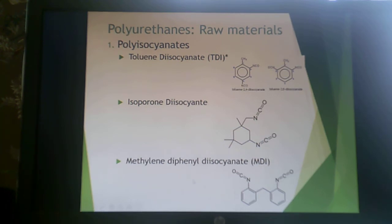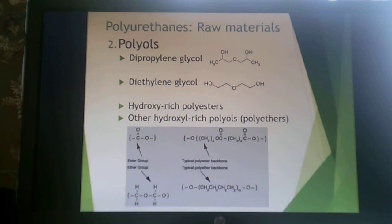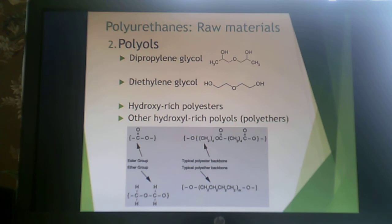Methylene diphenyl diisocyanate, or MDI, is another key polyisocyanate. For the polyol side, many options contribute hydroxyl groups: dipropylene glycol, diethylene glycol, ethylene glycol, propylene glycol, hydroxyl-rich polyesters, and polyether polyols — essentially anything with a hydroxyl group, including water.